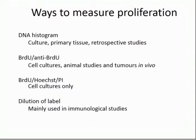To look at the viability of the cell, we can look at the DNA content and measure proliferation. We have a couple of different methods: we can perform a DNA histogram, a BrdU or anti-BrdU approach — specifically in vivo, in fixed samples, or in cell culture — using a multi-approach of Hoechst and PI, which are two different dyes that stain DNA, and BrdU that also stains DNA in different portions, or staining for antibodies using a more immunological approach.